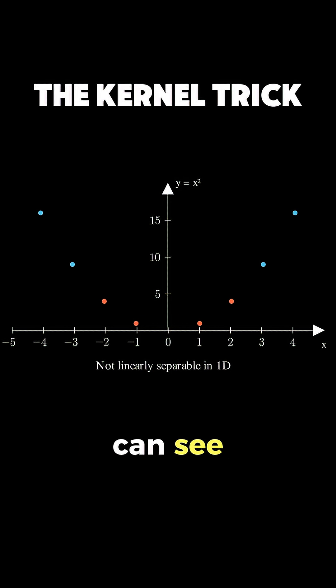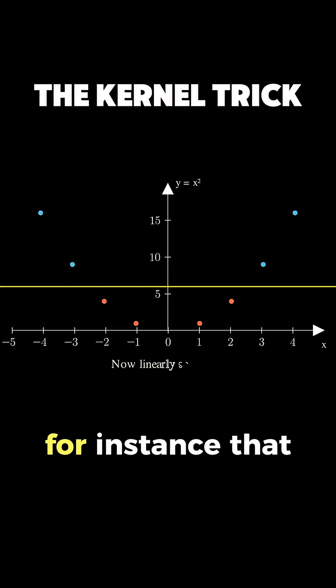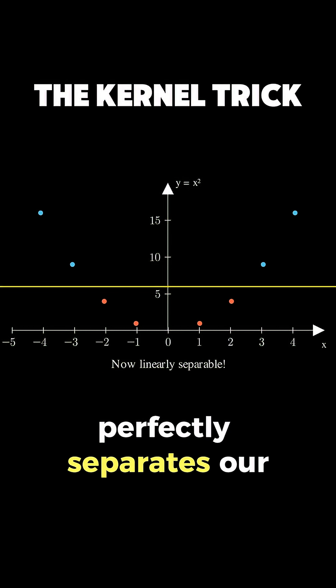As you can see, now we can draw a horizontal line at y equals 6, for instance, that perfectly separates our classes.